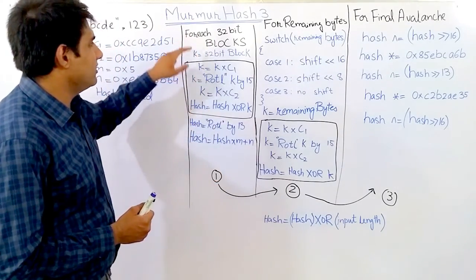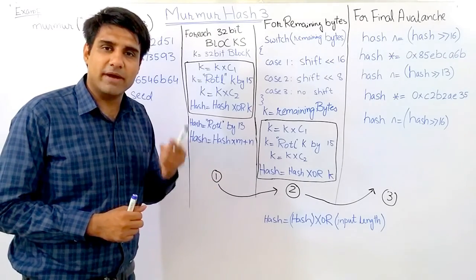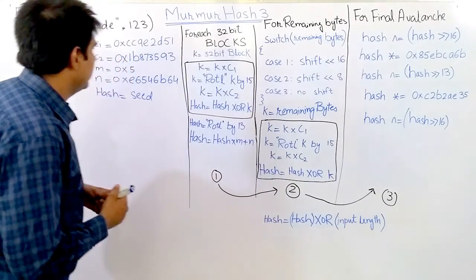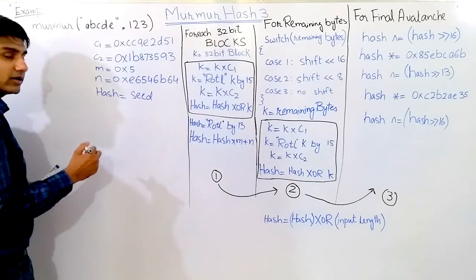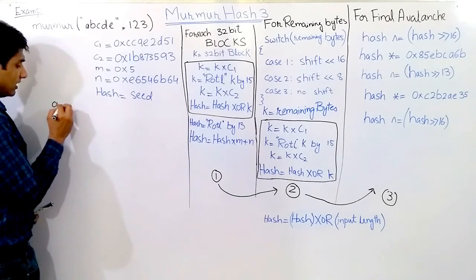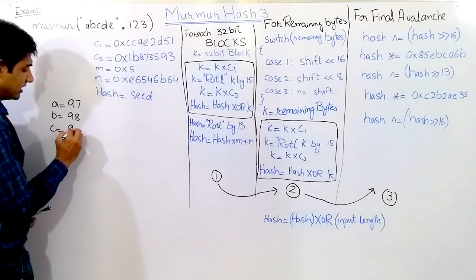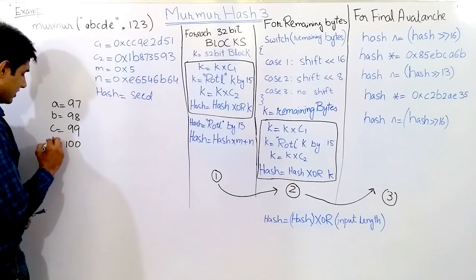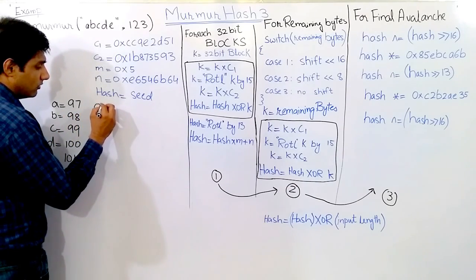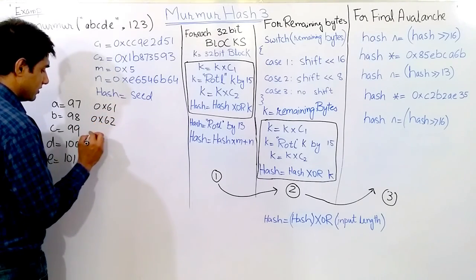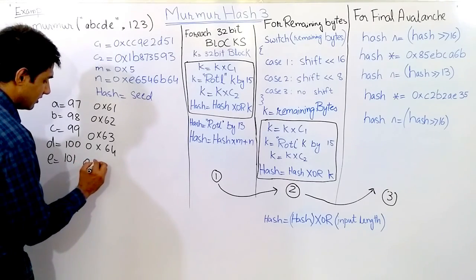For each 32-bit block: on 32-bit machines, one word consists of four bytes, and one byte equals eight bits — totaling 32 bits. Taking the example of 'ABCDE': the ASCII value of A is 97 (0x61), B is 98 (0x62), C is 99 (0x63), D is 100 (0x64), and E is 101 (0x65). These are written in hexadecimal notation for processing.